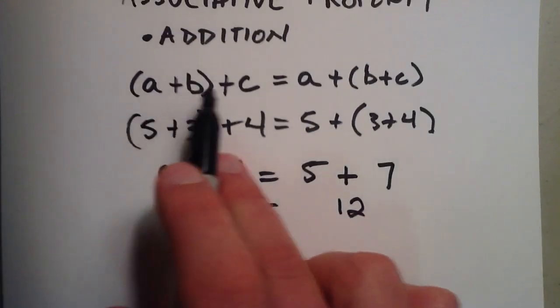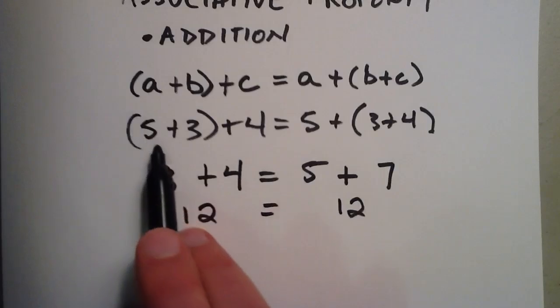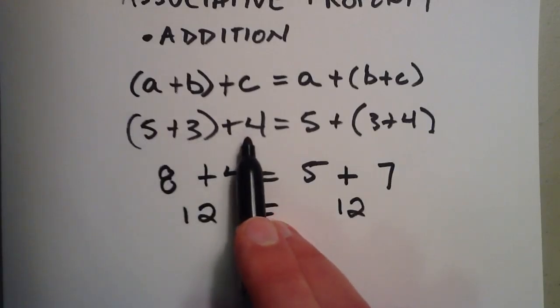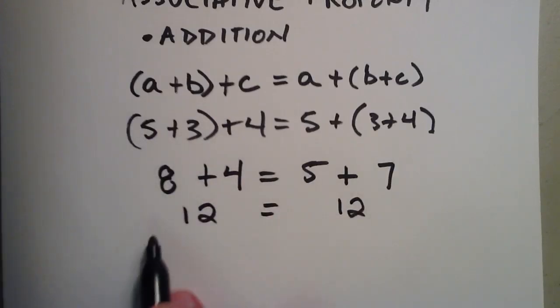And you can choose any numbers for A, B, and C. It doesn't matter if you pick 5, 3, and 4 like I did, or you can pick whichever numbers you like, and this will work every time.